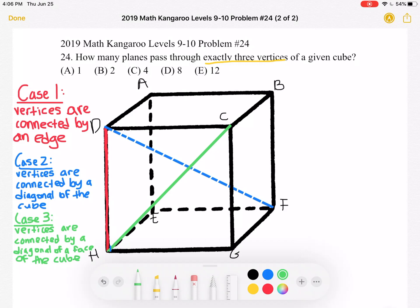This third point cannot be connected to either h or c by an edge because remember what happened in case one and it cannot form a diagonal of the cube when connected to h or c because remember what happened in case two. This means that when the third vertex is connected to c and h it forms two diagonals of two faces.